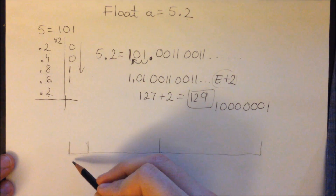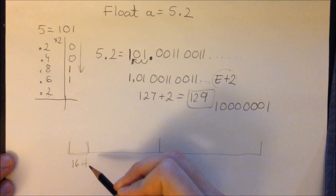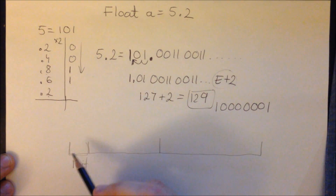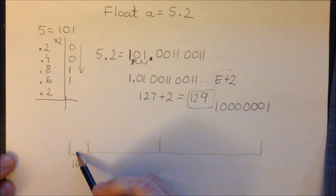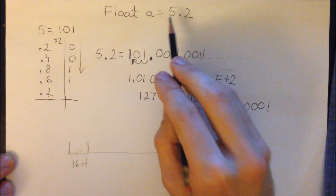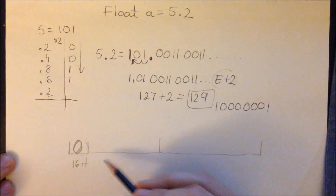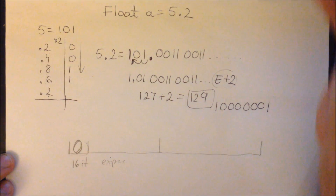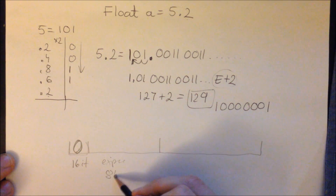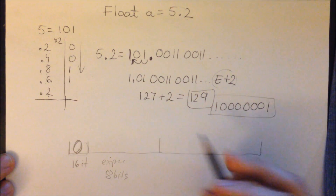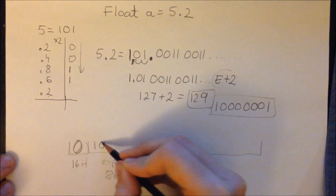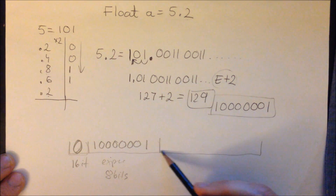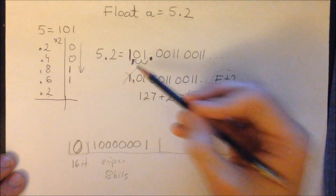Now we are building the floating point number. The first part is the sign bit — it is 1 bit which represents the sign of the number. If it is 0, the number is positive; 1 represents a negative number. Our number is positive, so we put 0 here. Next we insert our exponent, which has 8 bits: 1, six zeros, and 1. Then we insert our fractional number, but we drop the leading 1.